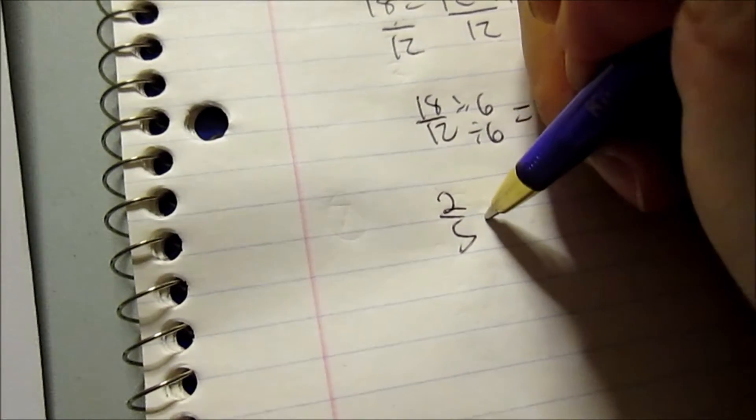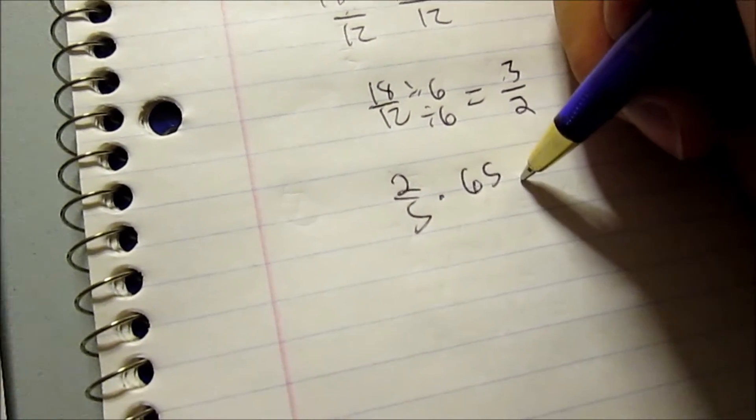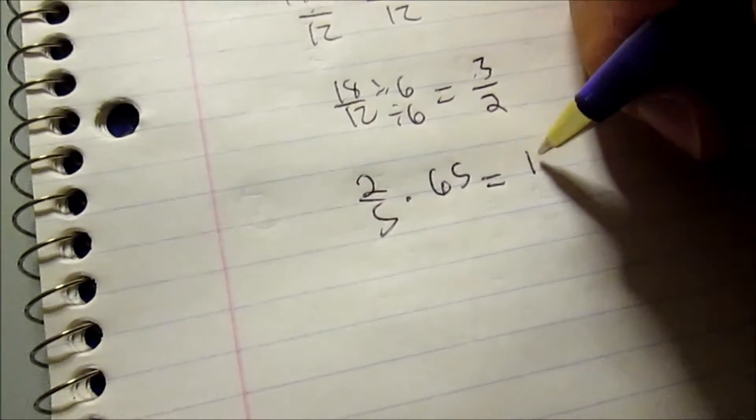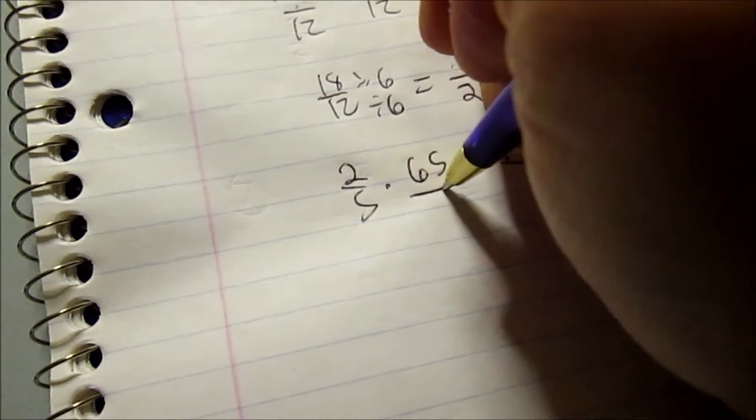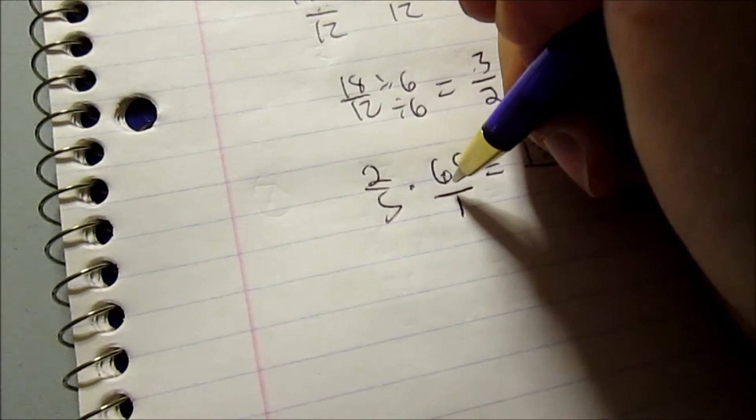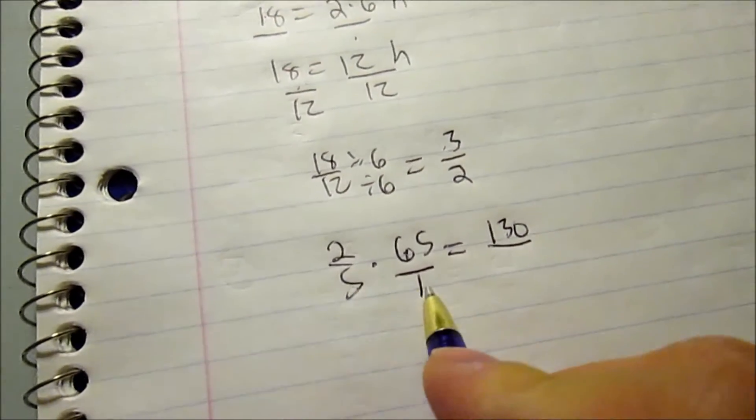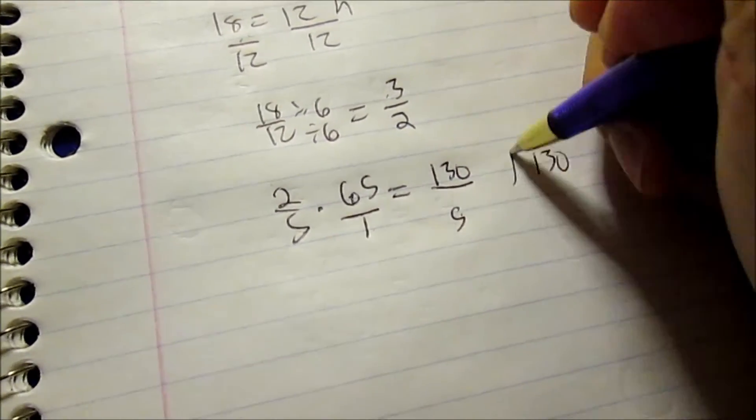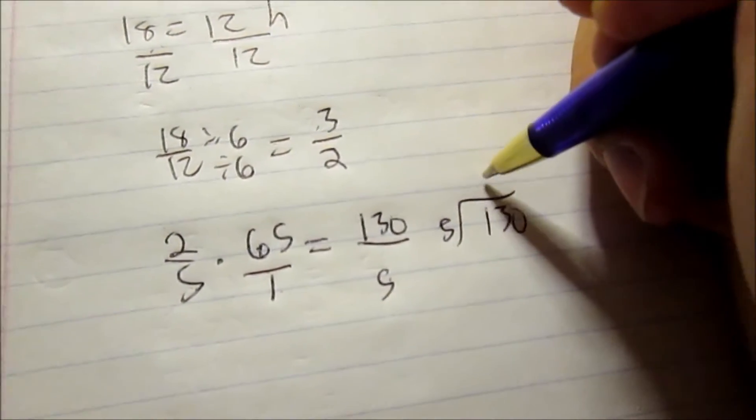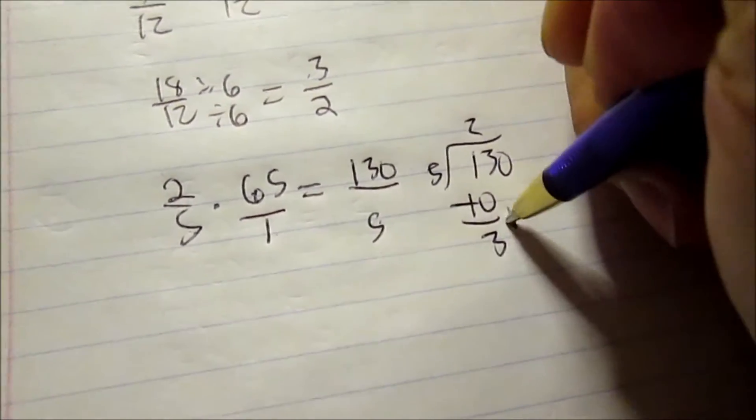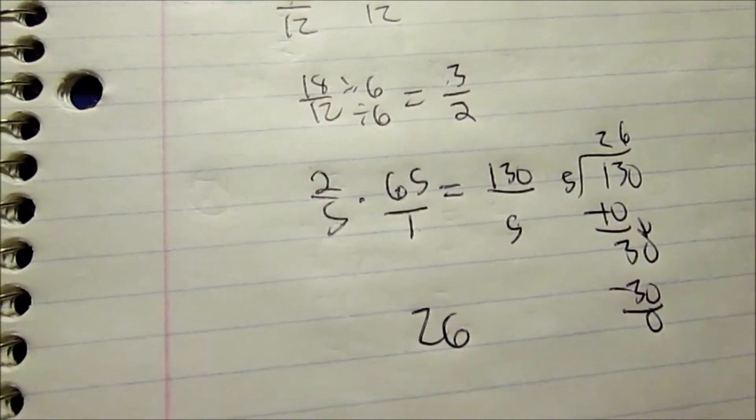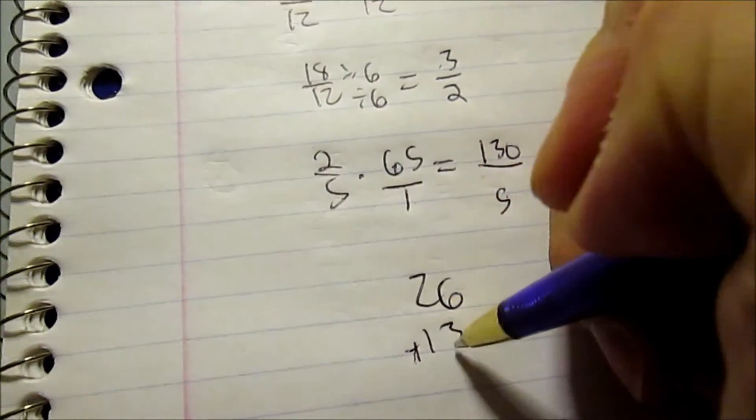Two-fifths of 65 means two-fifths times 65. 2 times 65, if you do the math you would get 130. When this happens, just put a 1 underneath 65 so you can multiply straight across. 5 times 1 is 5, and then do 130 divided by 5. 26, that's how many she did at the beginning.